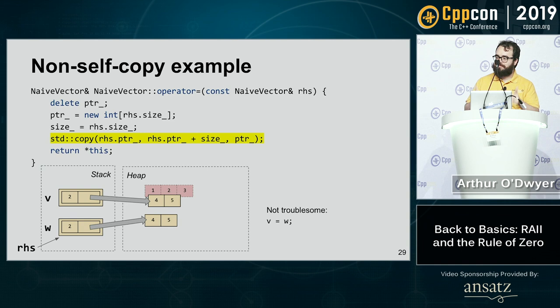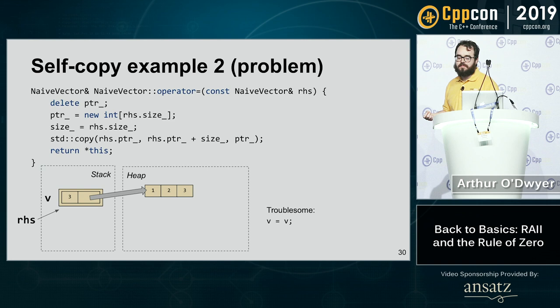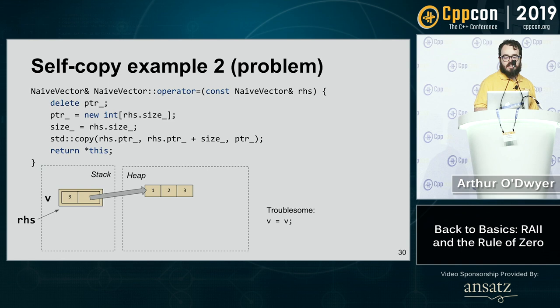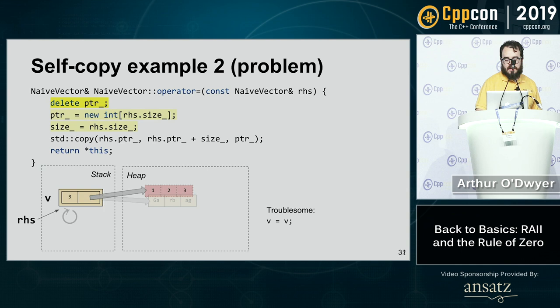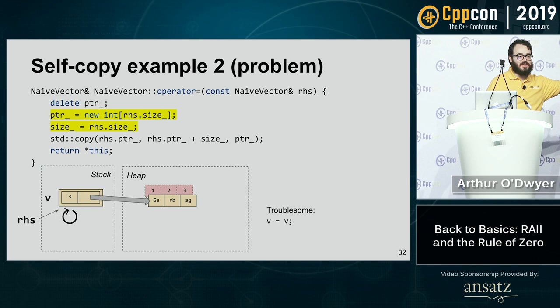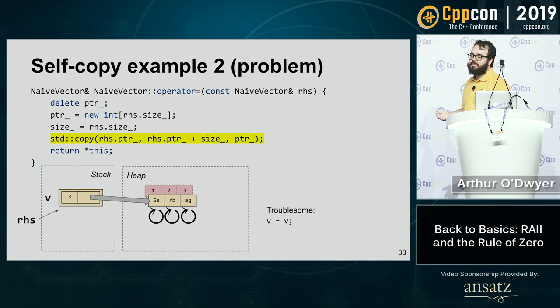Until someone tries to say v = v — assign from v to itself. In that case, RHS is a const reference to v itself. If the first step is to delete what v points to, and then we try to copy from RHS, which is the same object, the original data is already gone. We've deleted it. Self-copy is a problem.